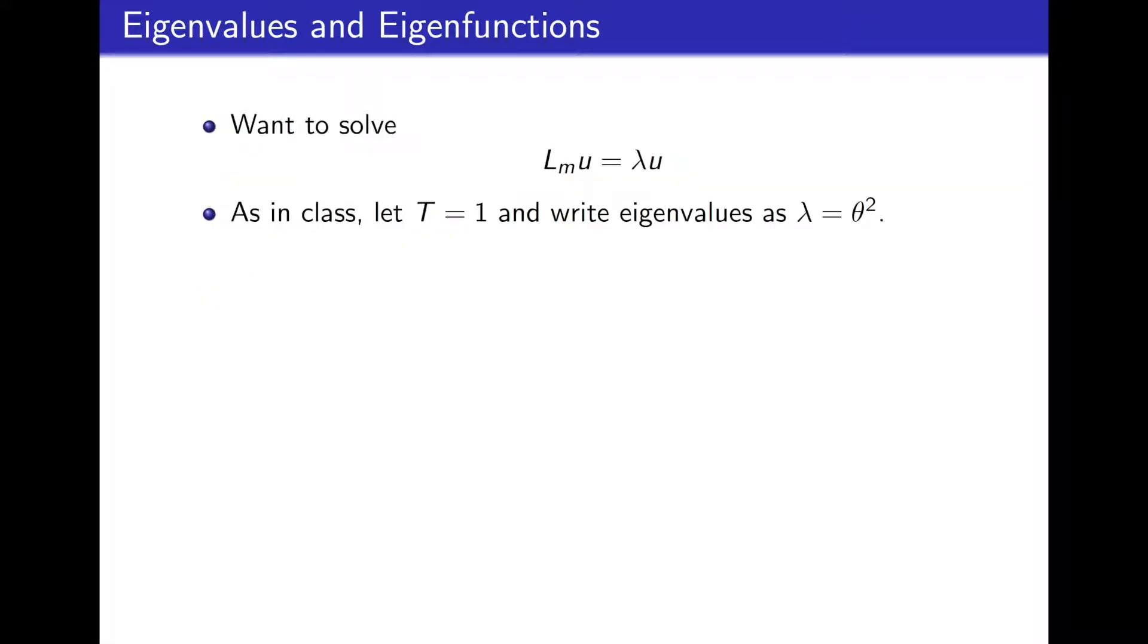To find the eigenvalues and eigenvectors, we want to solve this differential equation for both u and lambda. As we've done in class, we will assume that t is equal to 1. Once the eigenvalues are found with t equal to 1, we can simply multiply them by t for any general value of t. Also, since we know the eigenvalues lambda are positive, we are going to write lambda as theta squared, the same as what was done in class.